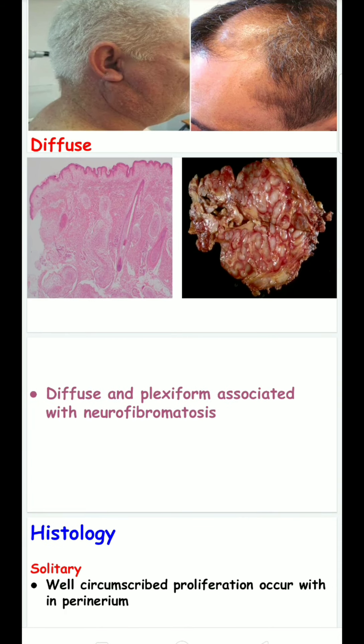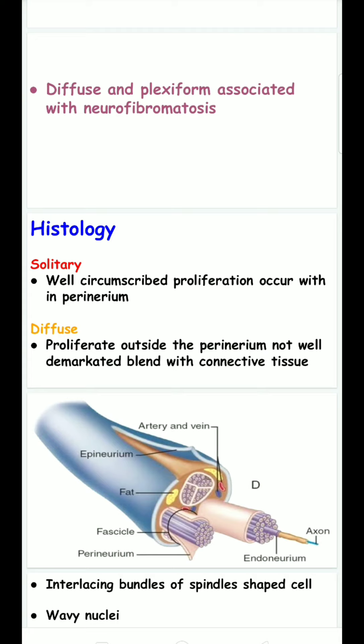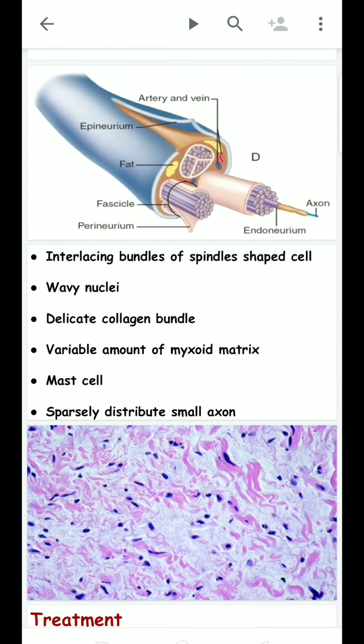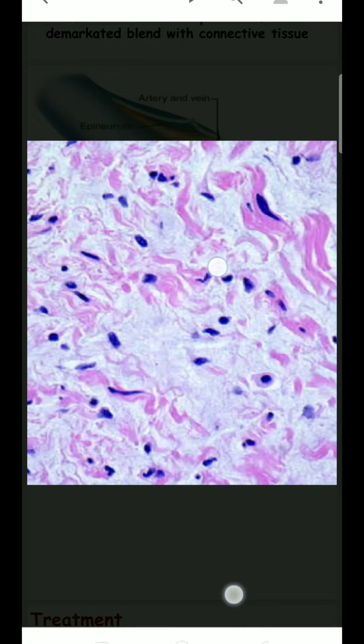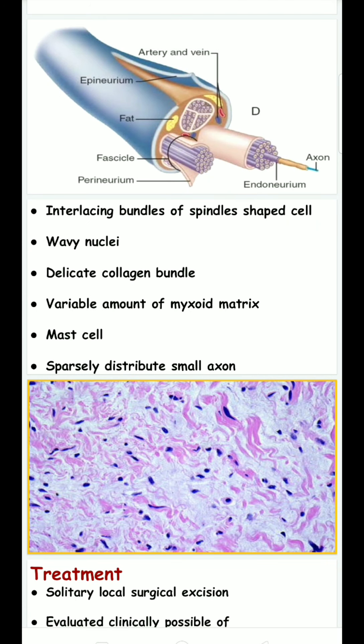Diffuse and plexiform types are associated with neurofibromatosis. Histologically, the solitary type is a well-circumscribed proliferation occurring within the perineurium. Proliferation outside the perineurium, not well demarcated and blending with connective tissue, is the diffuse form. Interlacing bundles of spindle-shaped cells and wavy nuclei are seen, along with delicate collagen bundles and a variable amount of myxoid matrix.